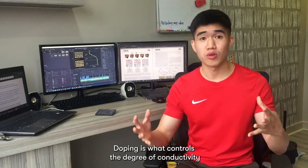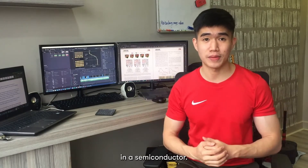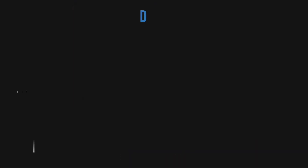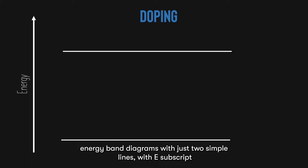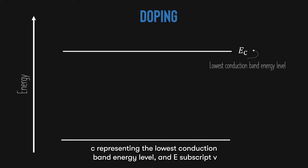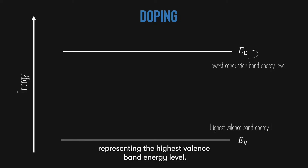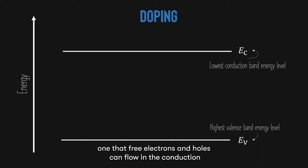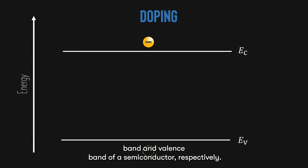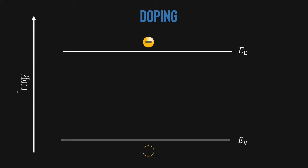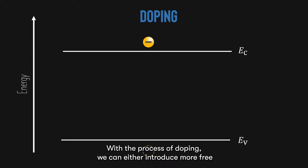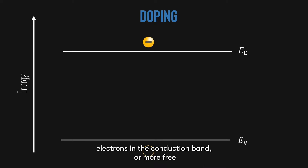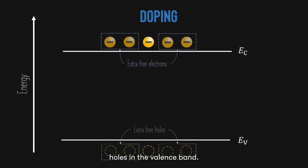Doping is what controls the degree of conductivity of a semiconductor. We can represent energy band diagrams with just two simple lines, with E subscript C representing the lowest conduction band energy level, and E subscript V representing the highest valence band energy level. We know from part one that free electrons and holes can flow in the conduction band and valence band of a semiconductor, respectively. With the process of doping, we can either introduce more free electrons in the conduction band or more free holes in the valence band.